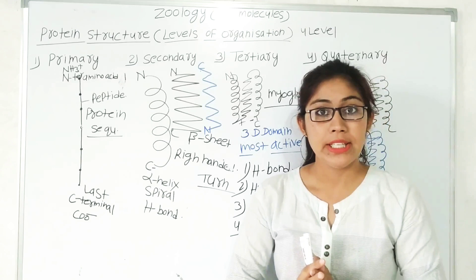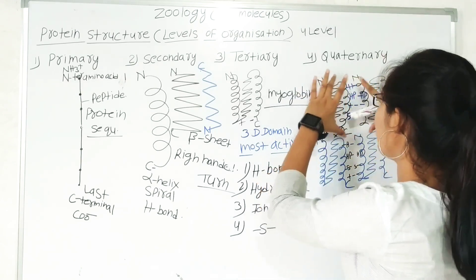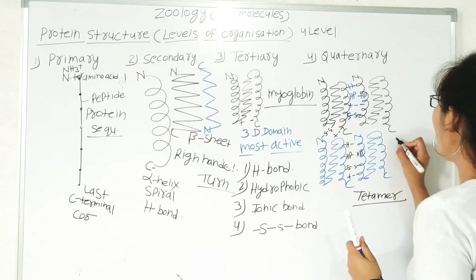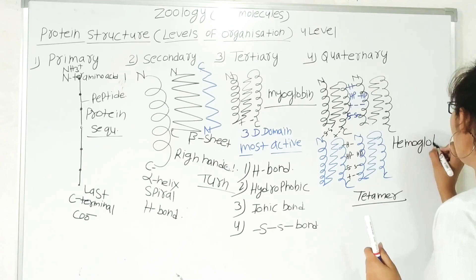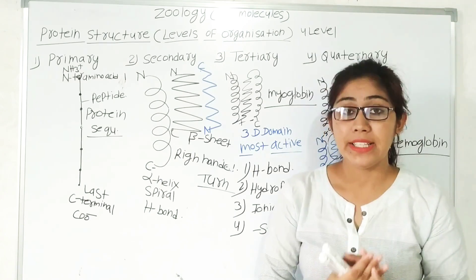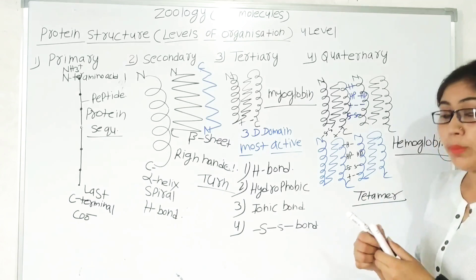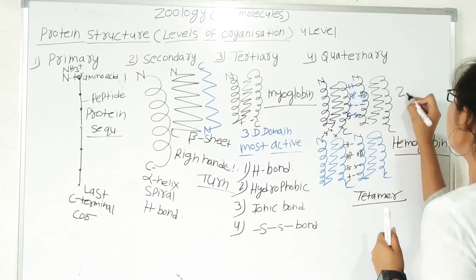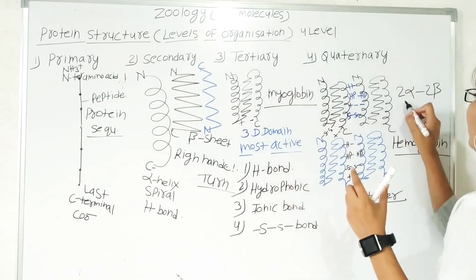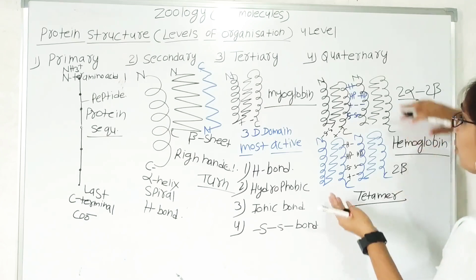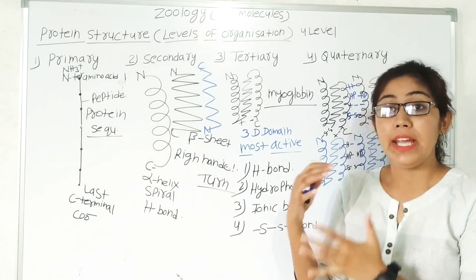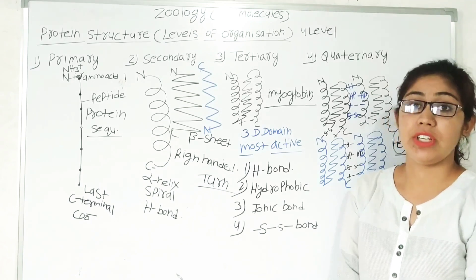For example, insulin has two subunits, forming a dimeric structure. The most important example is hemoglobin, present in red blood cells, which helps in the transport of oxygen. Hemoglobin is a tetrameric structure with four subunits: two alpha subunits and two beta subunits. These four subunits are linked via many types of interactions and form the quaternary structure known as hemoglobin.